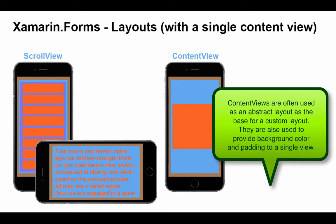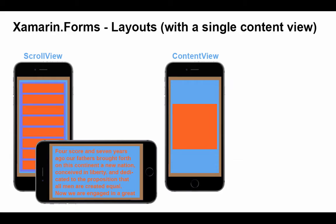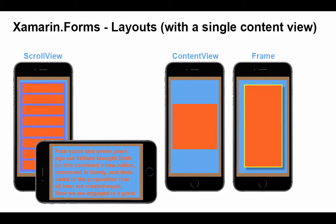The content view allows us to place one object. That object might be centered, at the top, or at the bottom — we can specify that with properties. Finally, the frame is similar to the content view in that it only displays one item, but it will add a color bordered frame around it. We can also apply a drop shadow to it, based on two properties we can set within the frame object.